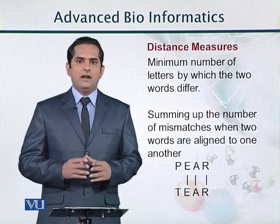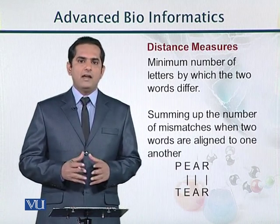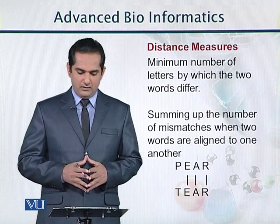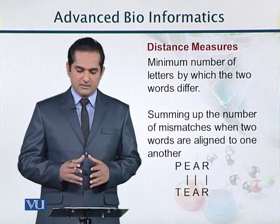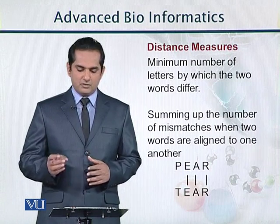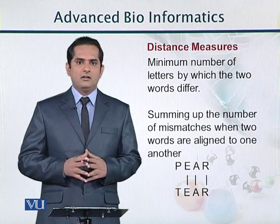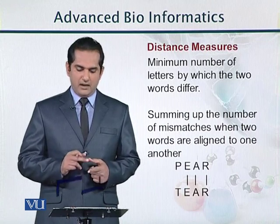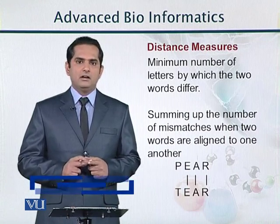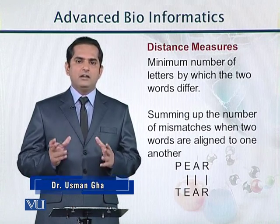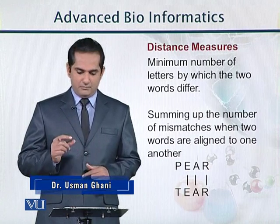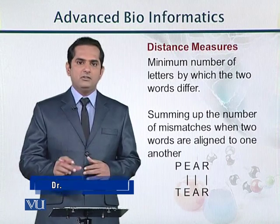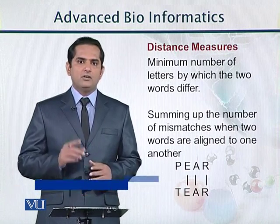The first is edit distance, which is also called Hamming distance. Edit distance is basically the minimum number of letters by which two words differ. In this slide I have given the example of two English words, which are 'pair' and 'tear'. There is only a difference of one character, that is P and T, so the edit distance between these two words is only one character.